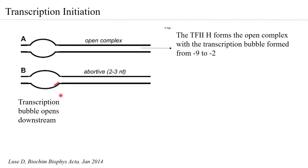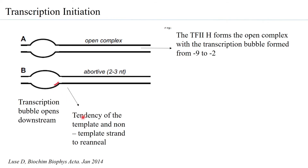Abortive initiation — also called transcript slippage — occurs because the template and non-template strands try to re-anneal, causing the RNA to fall off. This abortive initiation was also observed with RNA polymerase in the prokaryotic system, where RNA polymerases carry out abortive initiation several times before forming a stable ternary complex, after which transcription is initiated.